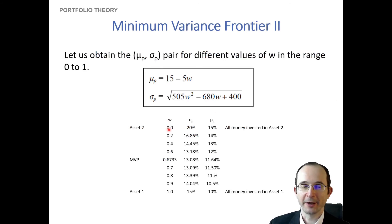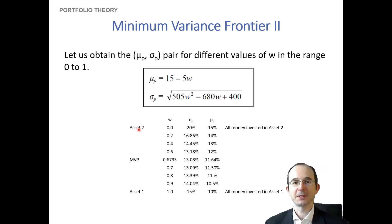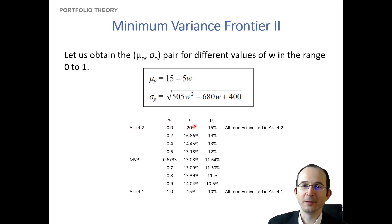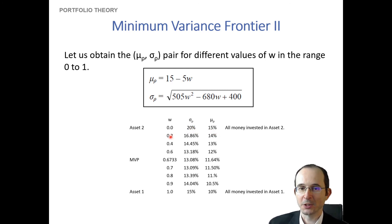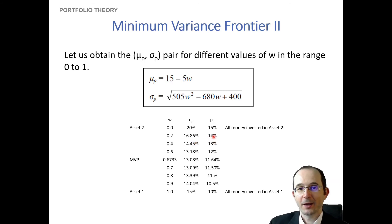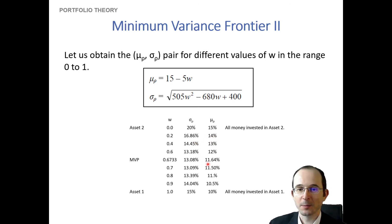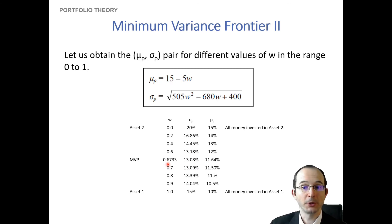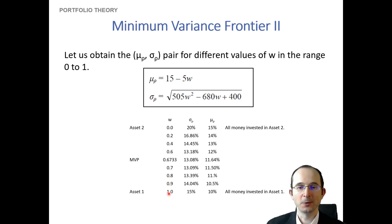If the weight on the first asset is zero — fully invested in asset two — we get the risk and return of asset two. As we increase allocation to asset one, risk goes down a bit because these assets are weakly correlated, and expected return comes down too since asset one has a lower expected return. At some point we reach the minimum variance portfolio, assuming a correlation of 0.2, and increasing further all the way to weight of 1.0 gives us asset one's risk and return characteristics.